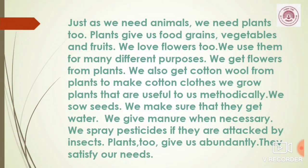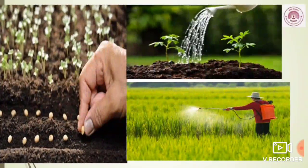Just as we need animals, we need plants too. Plants give us food grains, vegetables, and fruits. We love flowers too and use them for many different purposes. We also get cotton wool from plants to make cotton clothes. We grow plants that are useful to us methodically — we sow seeds, make sure they get water, give manure whenever necessary, and spray pesticides if they are attacked by insects. Plants too give us abundantly and satisfy our needs. Here are some images showing how we sow seeds, water plants every day, and spray pesticides to protect them from insects.